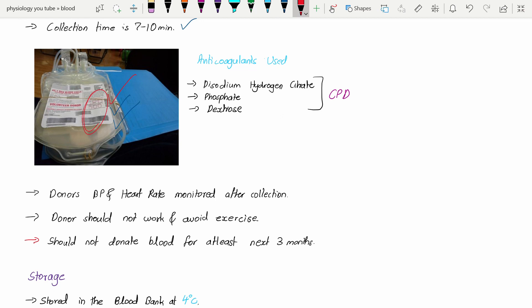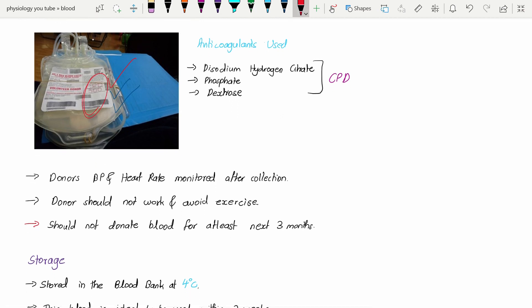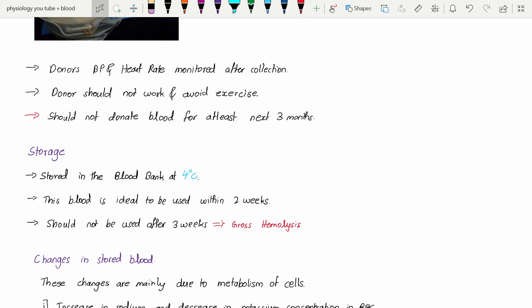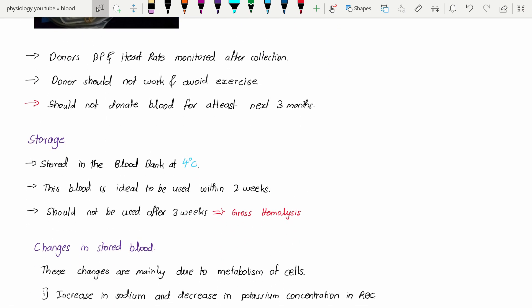These are the blood collecting bags. The anticoagulants used in these bags are disodium hydrogen citrate, phosphate, and dextrose. We call this CPD. After that you need to monitor the BP and heart rate of the donor after collection.